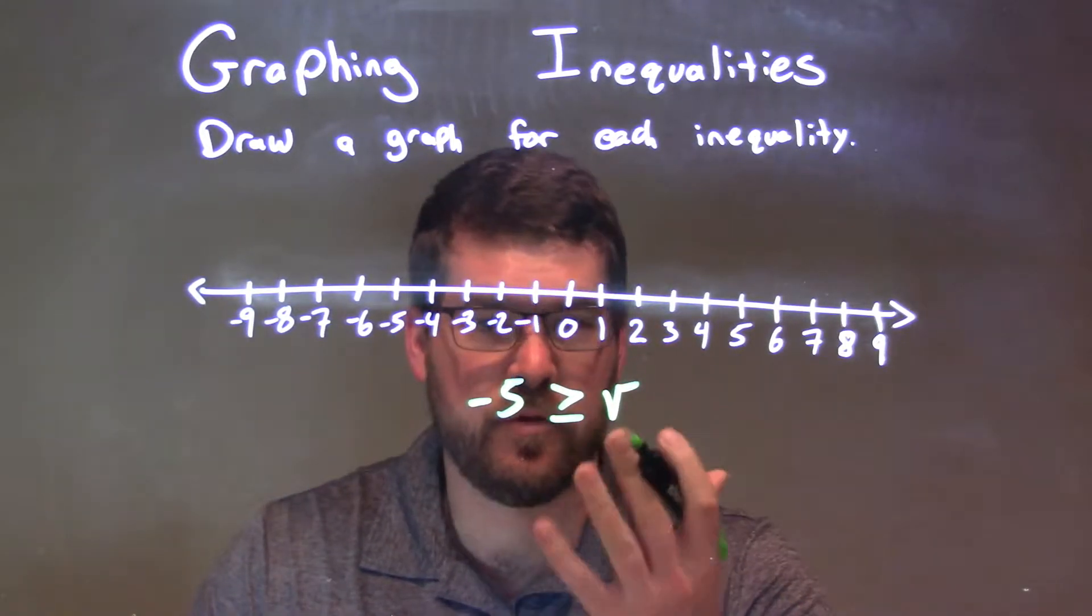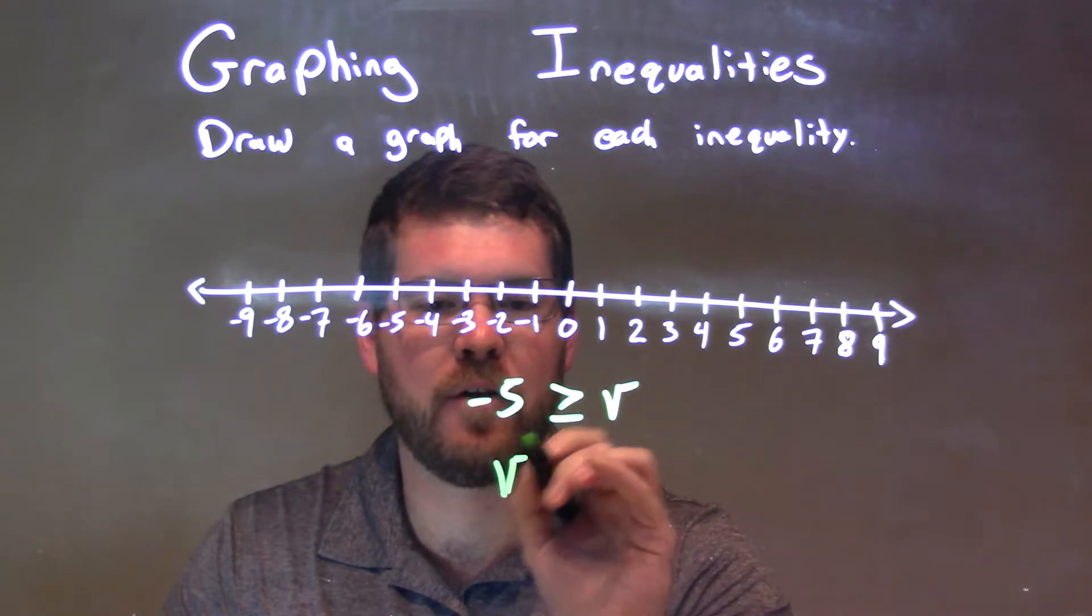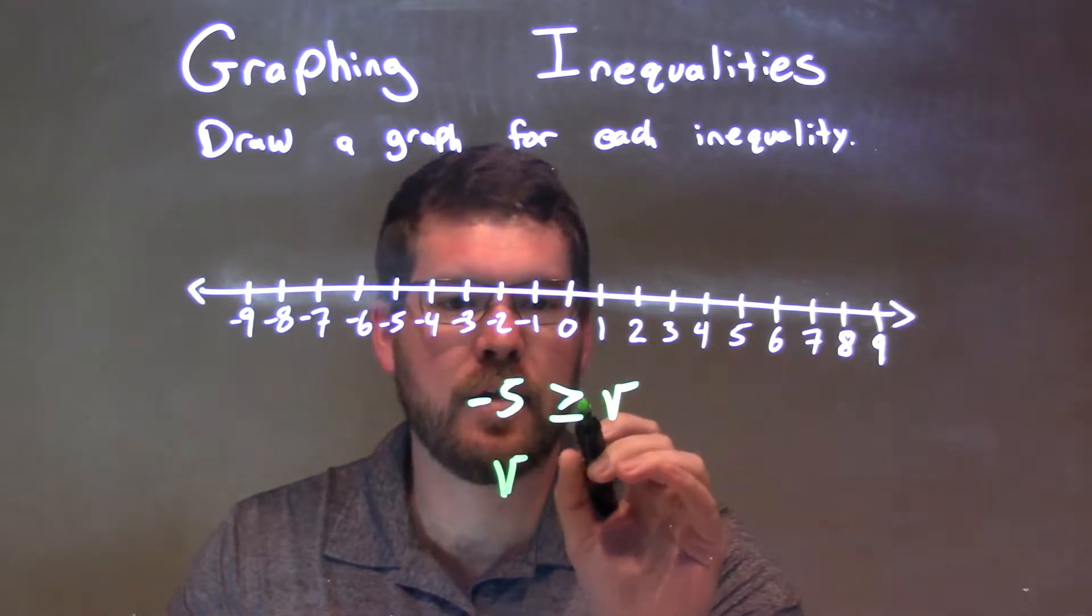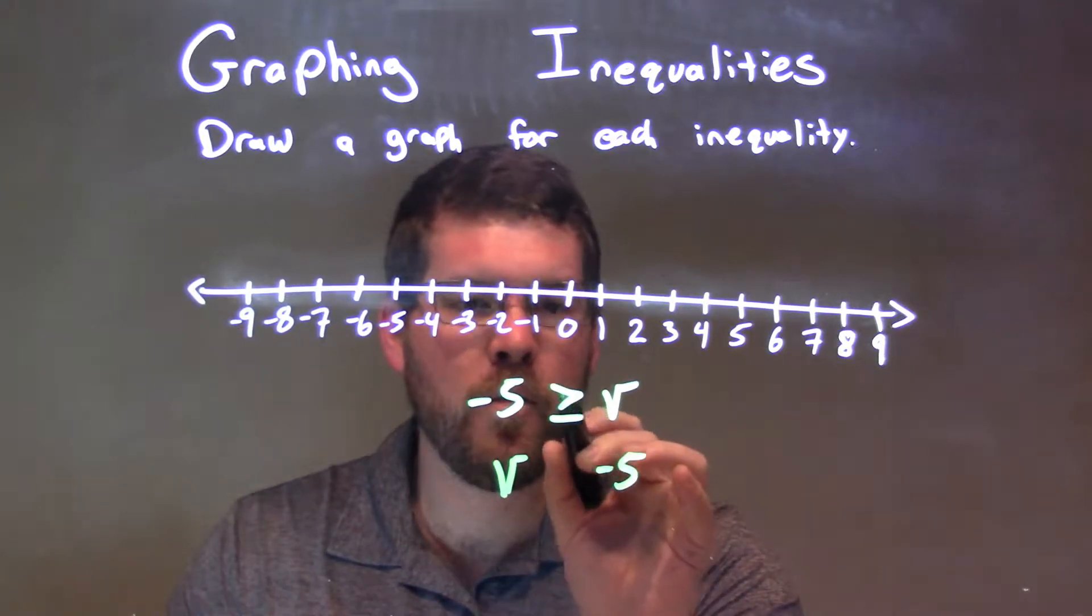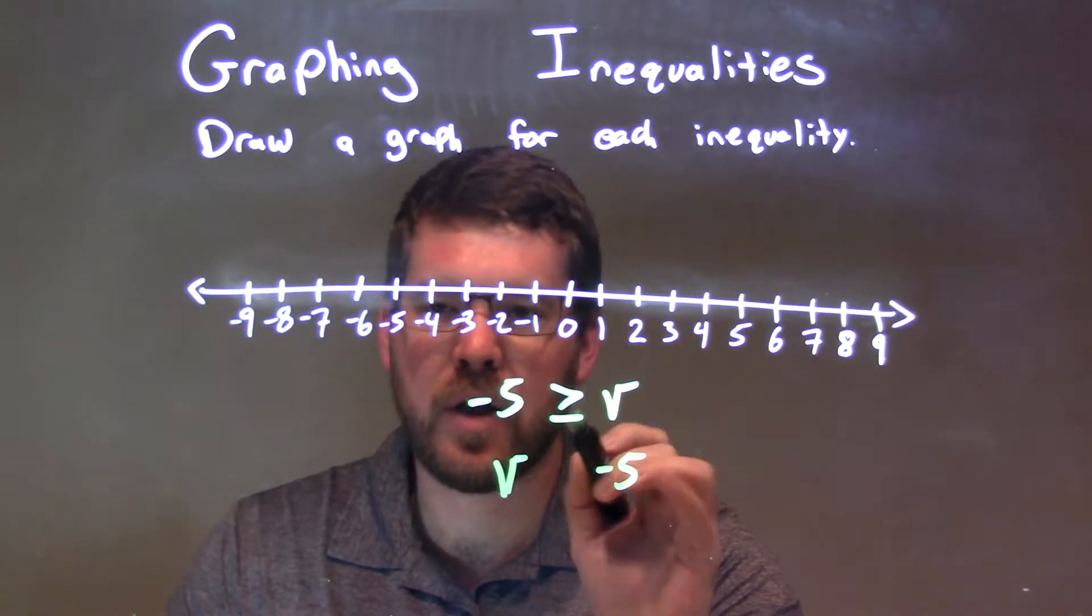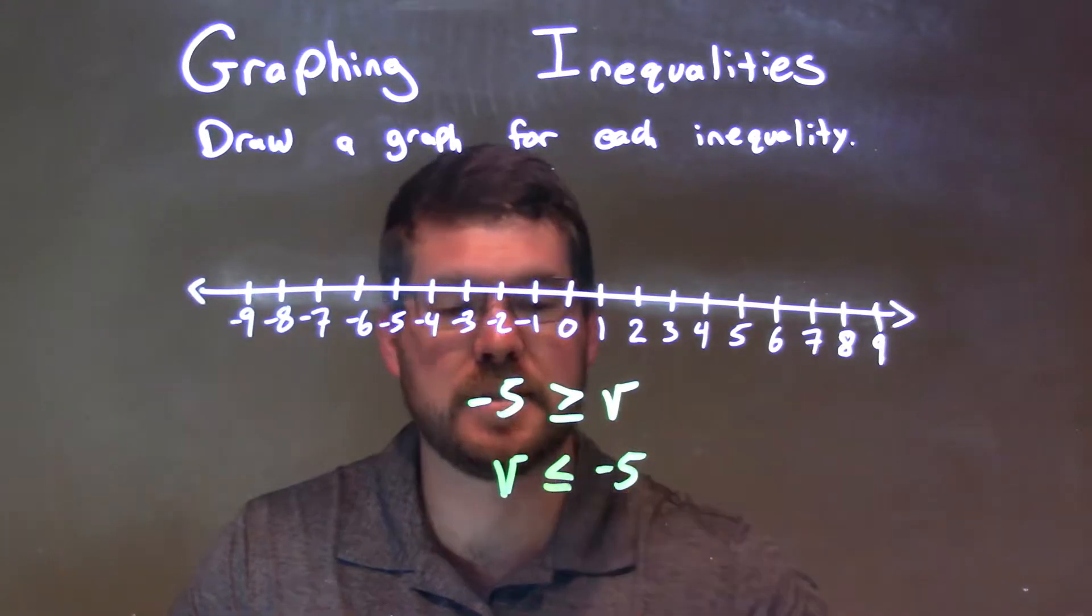I'm going to flip this around. I'm going to put V first, because I like to see it that way. So I have my V first, and since we flip it around with negative 5 over here, this greater than or equal to sign will switch to a less than or equal to sign.